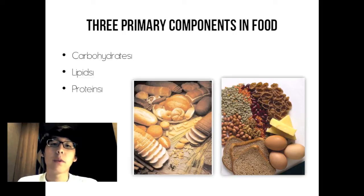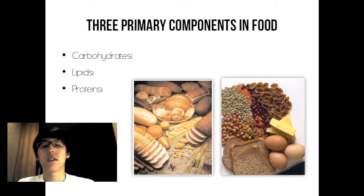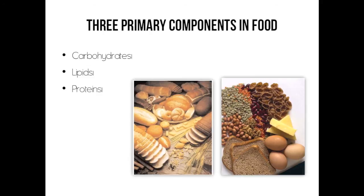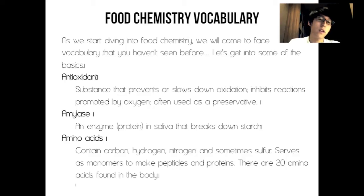Proteins are also important components of food, and every cell requires protein for structure and function. Proteins are complex polymers composed of amino acids. I'll go into them in depth later on. Now let's move to slide six and start diving into food chemistry, where we'll encounter some terms you may not have seen before.